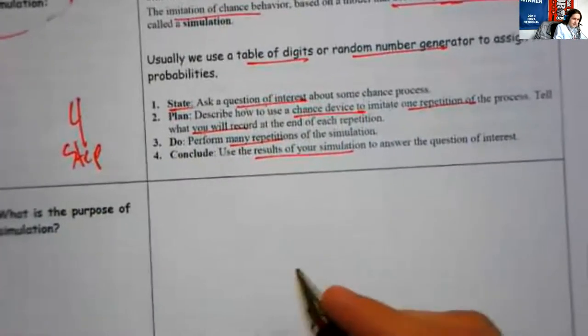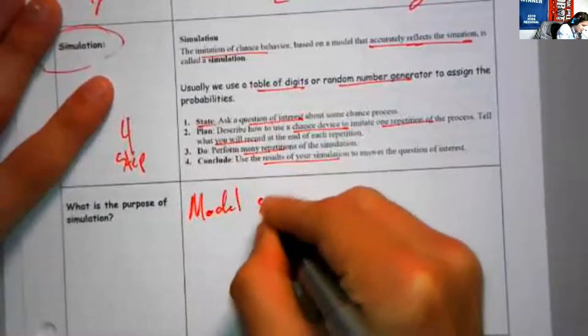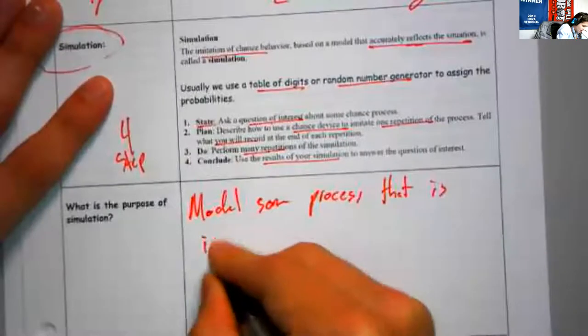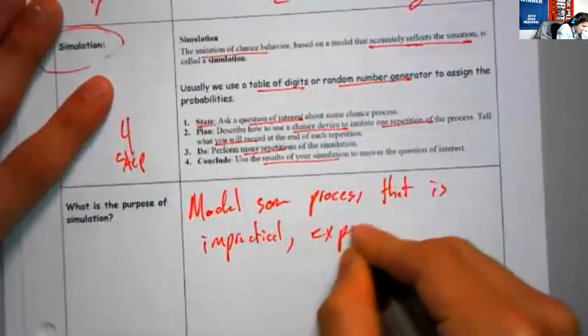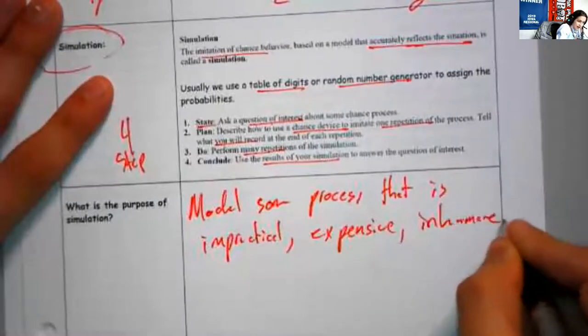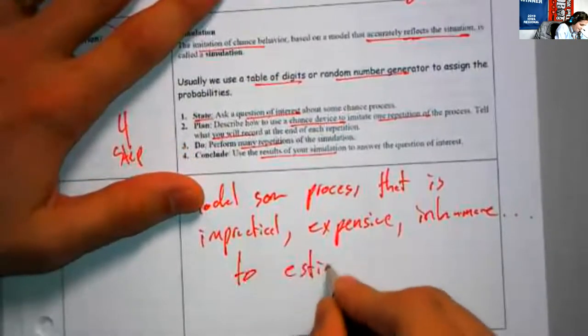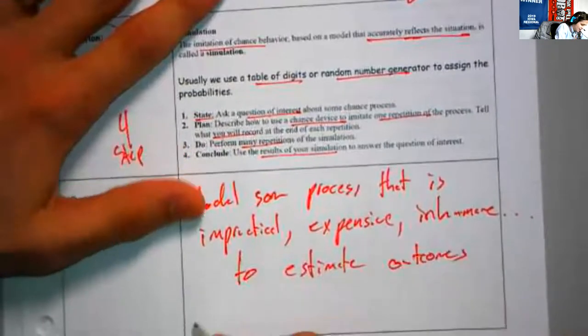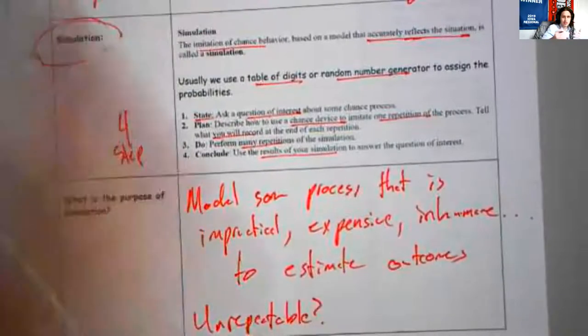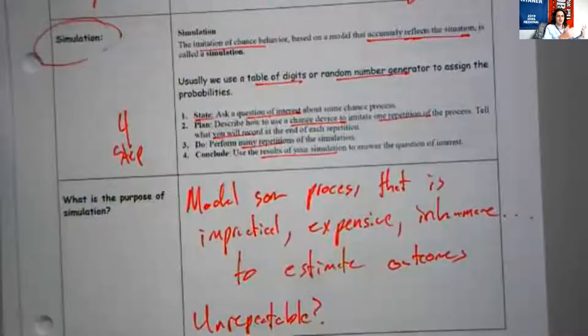What's the purpose of a simulation? It's to model some process that is impractical, expensive, inhumane, somehow not doable to estimate outcomes. Maybe it's an unrepeatable process. There's something we just can't do. We can't do it again. Like the presidential election. I don't go make everybody vote once a day to satisfy my own interests. You're not polling that. You're just taking a census every day and you're deciding, okay, this one is the one we're going to actually count. So that's no good, and people want to know who's going to win this. Who's going to win that. We use simulations for these things.